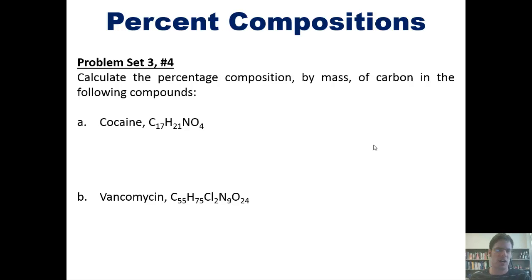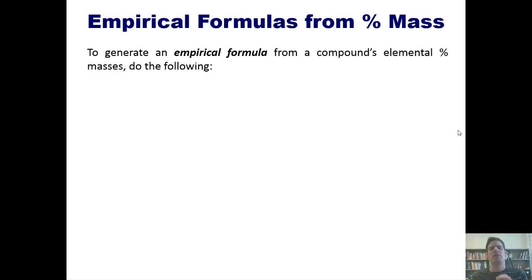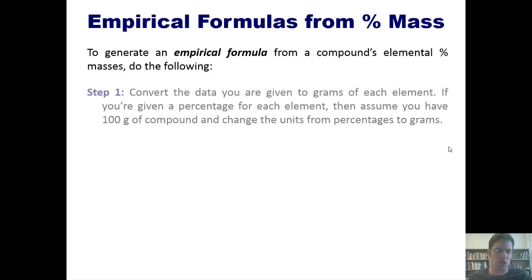I now want to introduce you to this topic: calculating a substance's empirical formula from its percent mass. Now, if you want to generate an empirical formula from a compound's elemental percent mass, here's how you'd go about doing it. First, convert the data you're given into grams for each element. If you're given a percentage for each element, then just assume you have 100 grams of compound and change the units from percentages to grams.